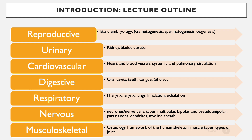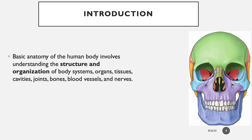For the musculoskeletal system, we look at osteology — the bone framework of the human skeleton — muscles and their types, and then the joints as well. As part of the introduction, basic anatomy of the human body involves understanding the structure and organization of body systems, organs, tissues, cavities, joints, bones, blood vessels, and nerves.